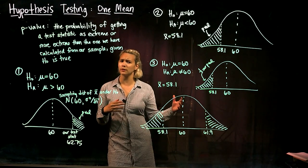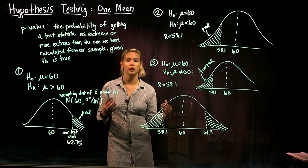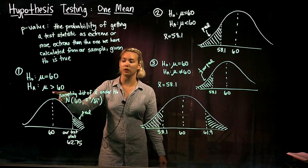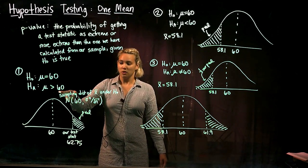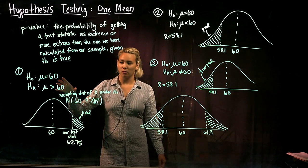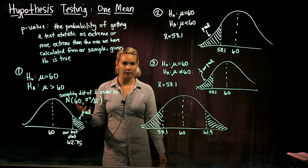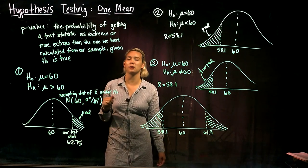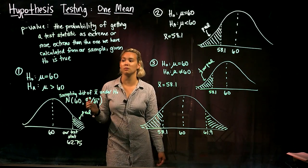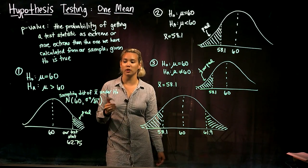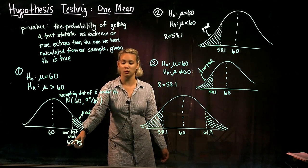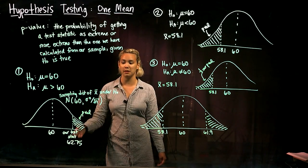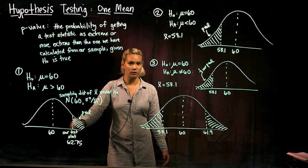In the previous video, we calculated a p-value based on the alternative hypothesis that mu is greater than 60. So how did we calculate that p-value? We said we would need to calculate the probability of getting a test statistic as extreme or more extreme than the one that we got, which was 62.75, given that the null hypothesis is true — meaning given that mu is equal to 60.